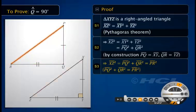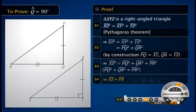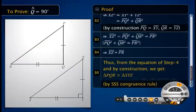Therefore, the square of side XZ of right-angled triangle XYZ equals the square of side PR of triangle PQR. From the equation of step 3, we conclude that side XZ equals side PR. Thus, from the equation of step 4 and by construction, we get triangle PQR congruent to triangle XYZ by SSS congruence rule.